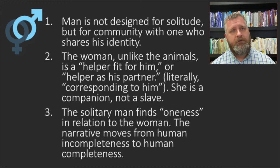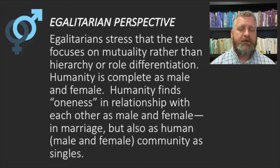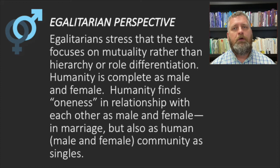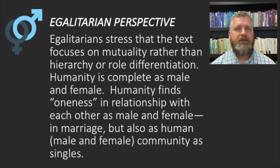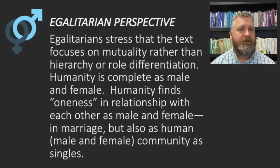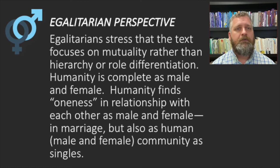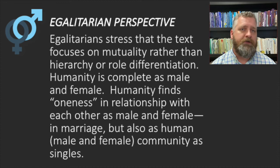An egalitarian is going to say we need to stress that the text focuses on mutuality rather than hierarchy or role differentiation. Humanity is complete as male and female. Humanity finds oneness in relationship with each other — in marriage, but also just as humans, males and females, singles in a community where we're just better off together. There is no inherent hierarchy or role differentiation in this text in chapter two.